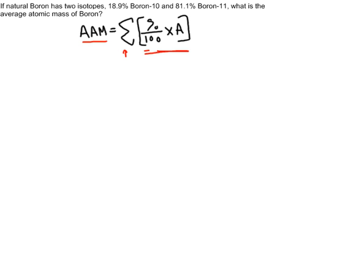In this case we have two isotopes, so basically we'll be putting numbers into this formula twice and adding them together. Had there been three isotopes, we would do this formula three times and add them all up, and that's what the sigma here means.